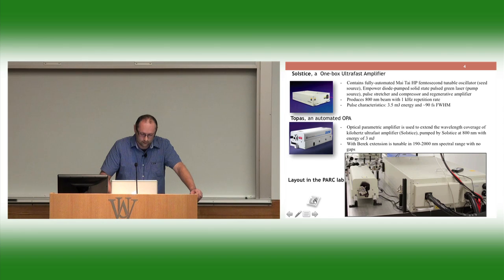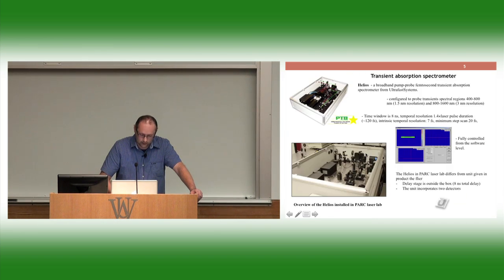That part we use just for transient absorption spectrometer. Here is our transient absorption spectrometer, Helios. Helios is made by Ultrafast Systems. Our version is way more complicated than the factory flyer. We have two detectors that are used for two different spectrum ranges: one for visible, second for near infrared. We have much longer stage to provide the delay between pump and probe beams. It's so long that it cannot fit inside the box, it's actually outside.